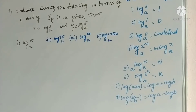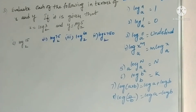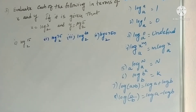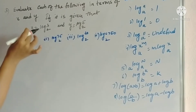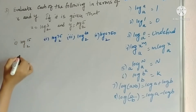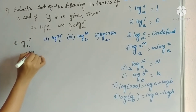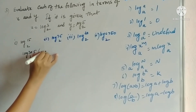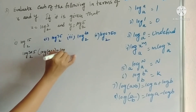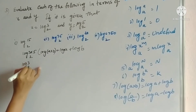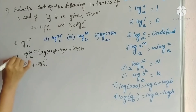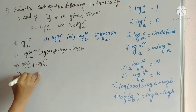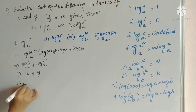Now, problem three: evaluate each of the following in terms of x and y, given that x equals log 3 base 2 and y equals log 5 base 2. The first one is log 15 base 2. We write 15 as 3 into 5, so log(3 into 5) base 2. Using log(a into b) equals log a plus log b, this is log 3 base 2 plus log 5 base 2, which equals x plus y.